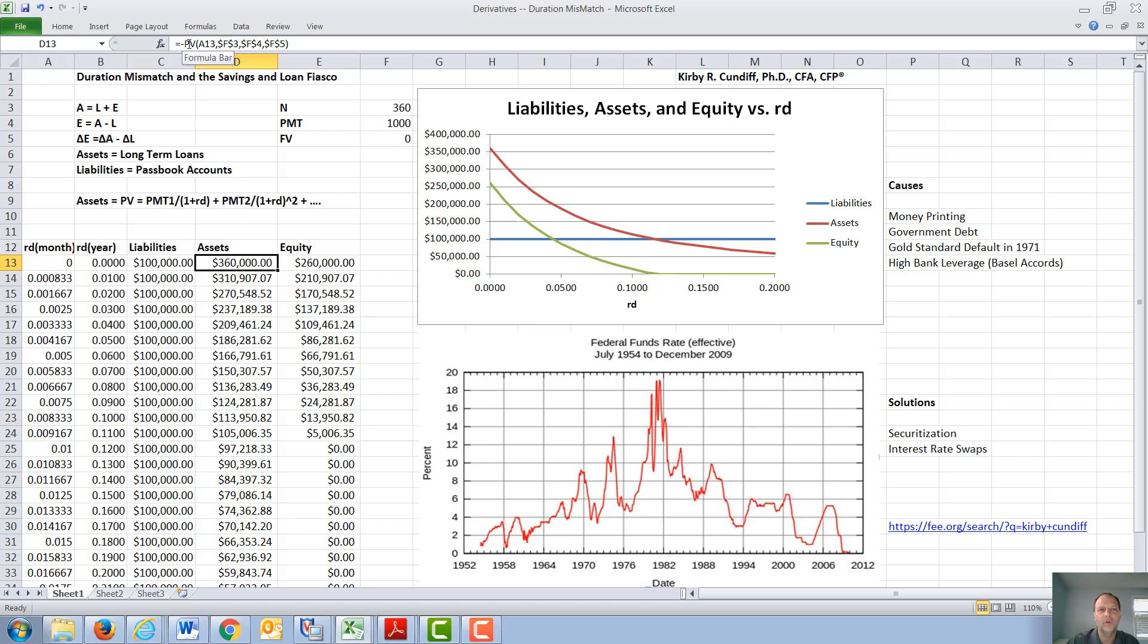If we value a home loan in this way, using our standard annuity equation, present value of A13, where A13 is going to be our monthly interest rate, F3 is the N, our number of payments, F4 is the $1,000 monthly payment, and F5 is zero after the annuity is paid off. So these we will keep constant, and we will allow the interest rate A13 to vary.